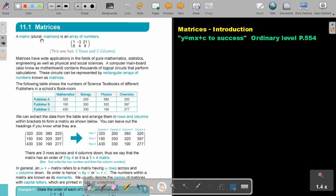A matrix, the plural is matrices, is an array of numbers in brackets. This one has two rows and three columns. Did you notice? First the rows, then the columns.